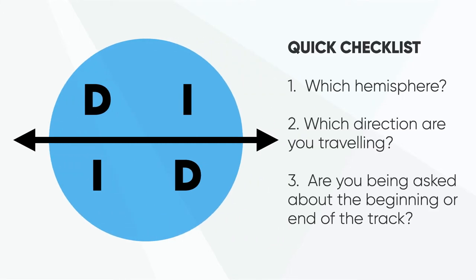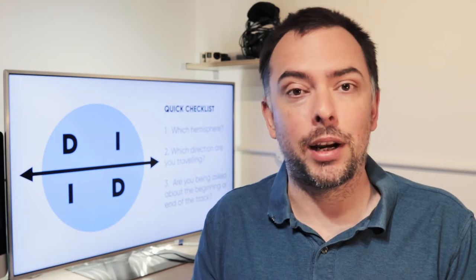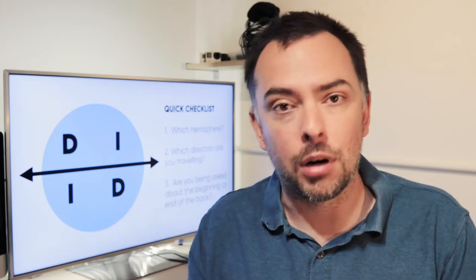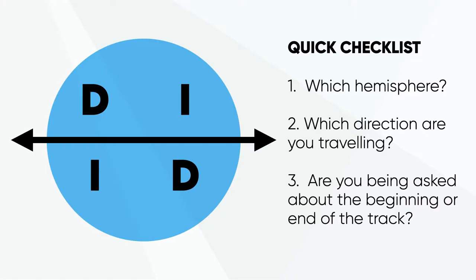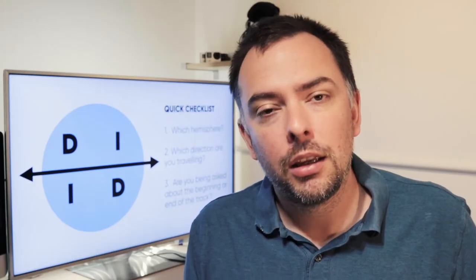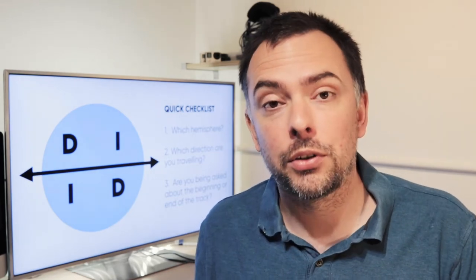There's a really quick checklist that you can apply as you go into these questions to work out precisely what the question is actually asking you. The first question is which hemisphere are you in? That greatly affects whether your great circle track is going to be above or below the rhumb line track between your two points — remember, the great circle track always arches towards the closest pole. The second item on the checklist is to work out which direction you're travelling. And the third item to work out is whether they're asking you about the start of the route or the end of the route. If you start off with those questions in the back of your mind, then you stand a good chance of not making any stupid mistakes when it comes to actually answering these exam questions. So, speaking of exam questions, let's take a look at some.